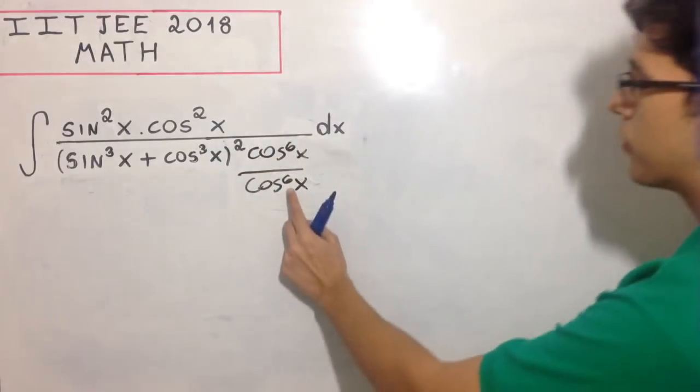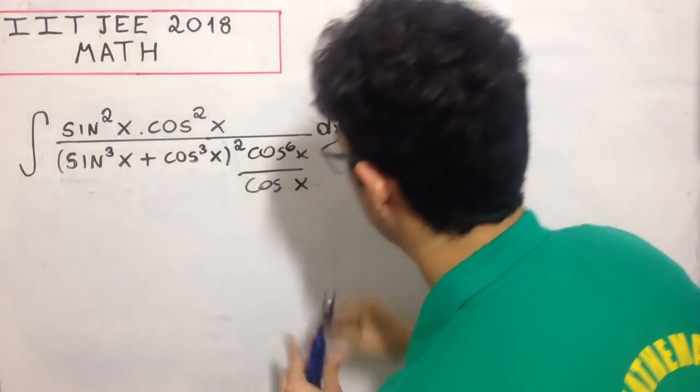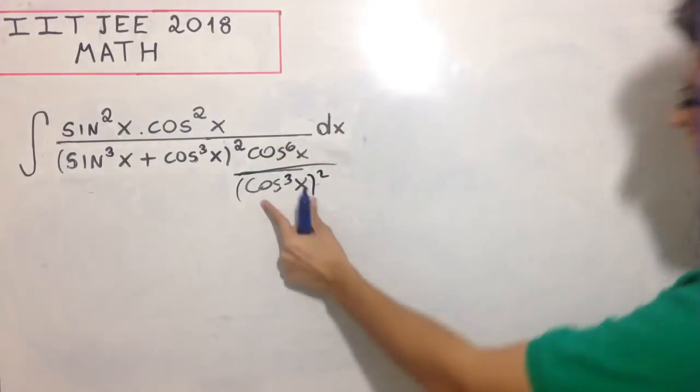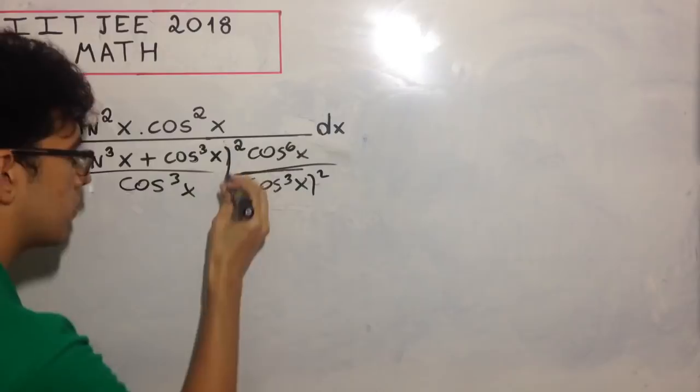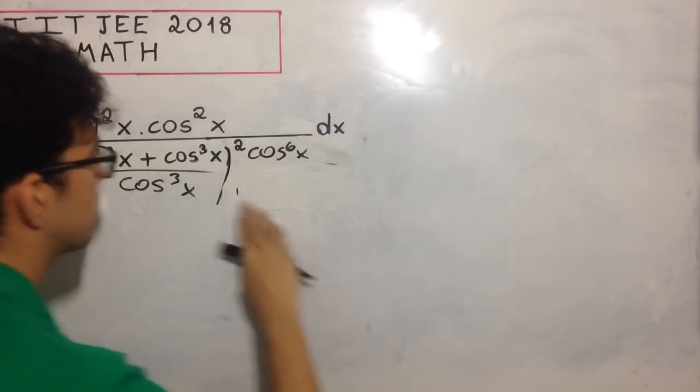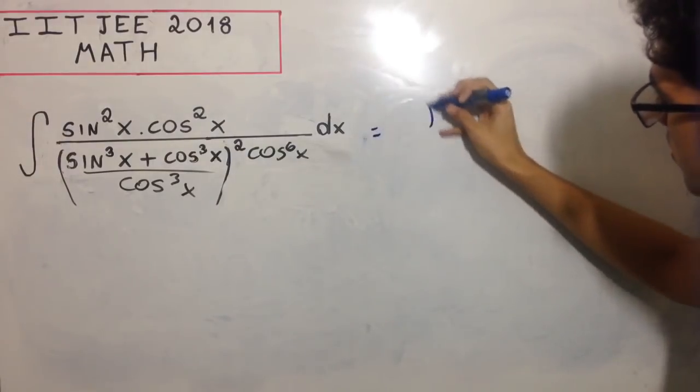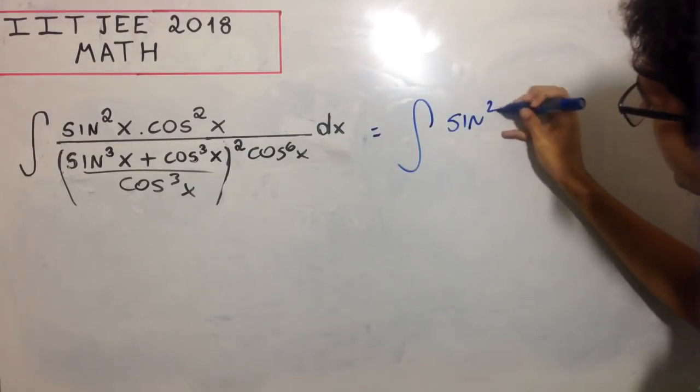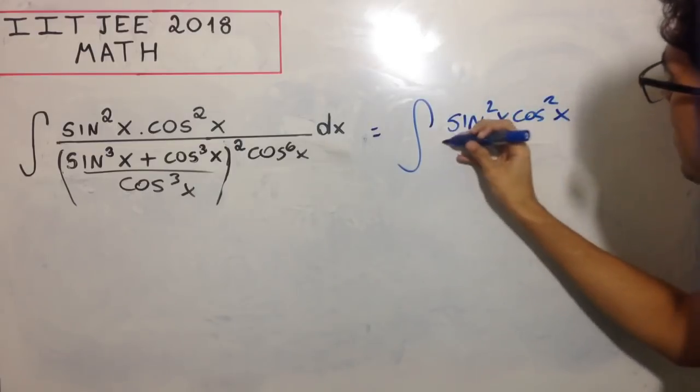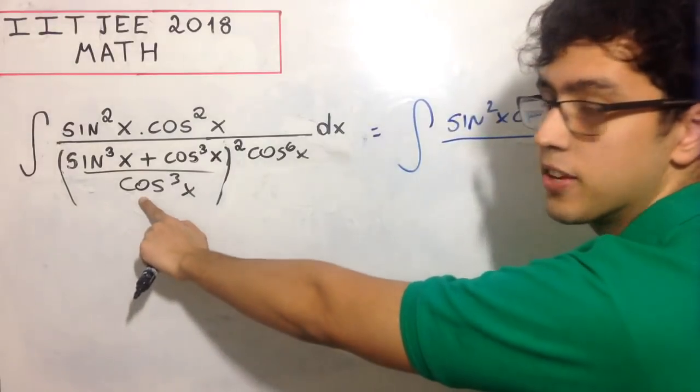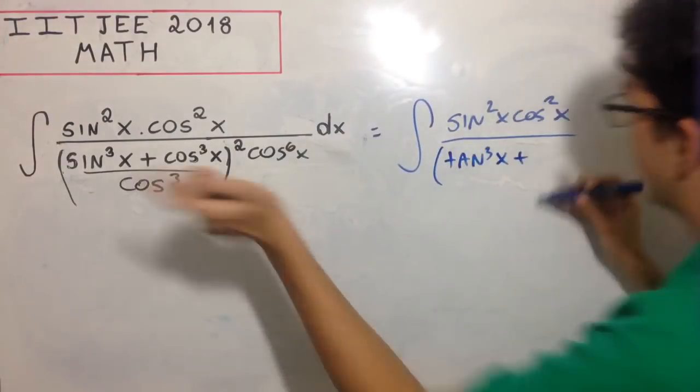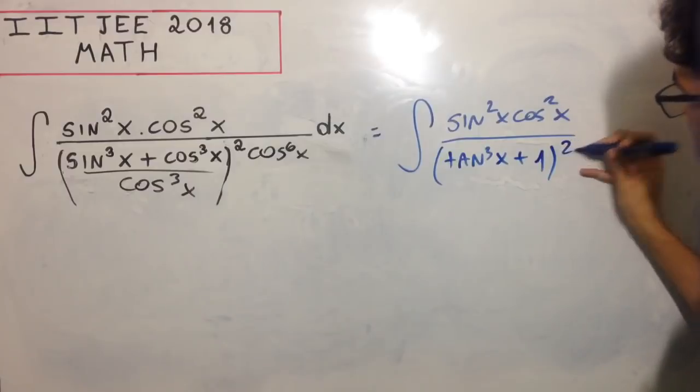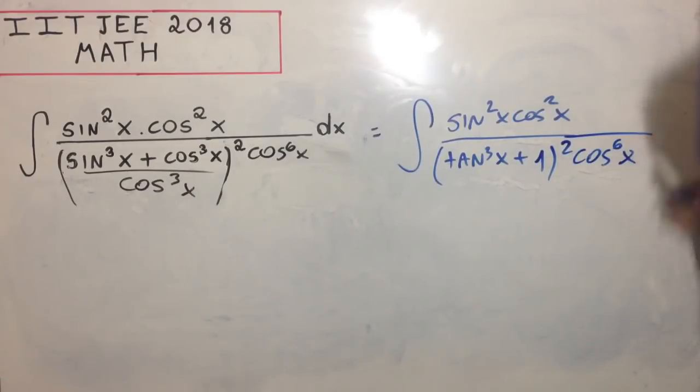Let's multiply by cos⁶x like this, and we can write this in a different way. I'll put this inside here, so it becomes the integral of sin²x cos²x divided by (sin³x cos³x + cos⁶x).